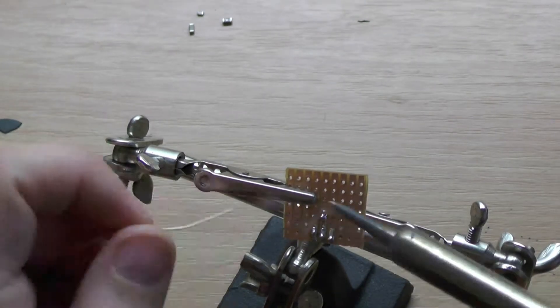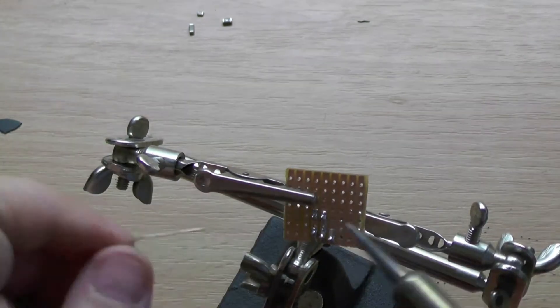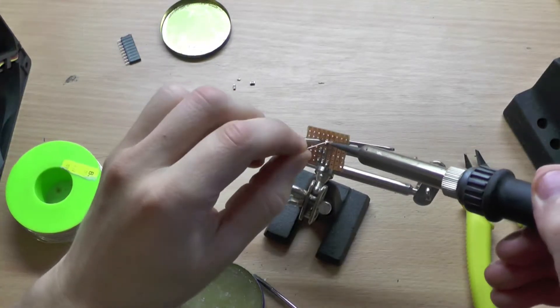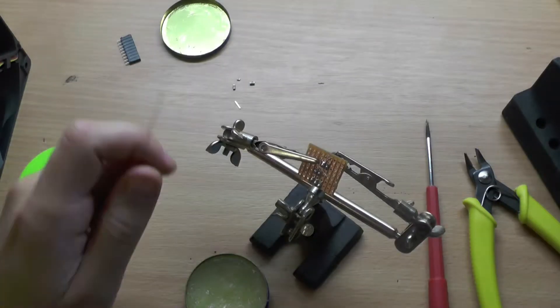I soldered in a pin header for the input DC and two headers to the 5V output rail. The ground rail is in the center.